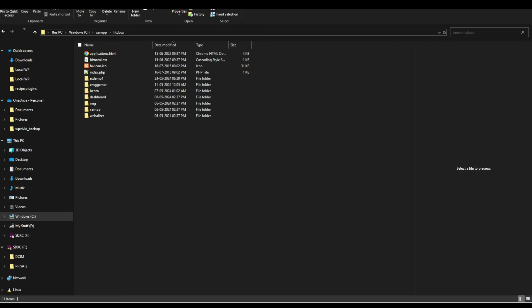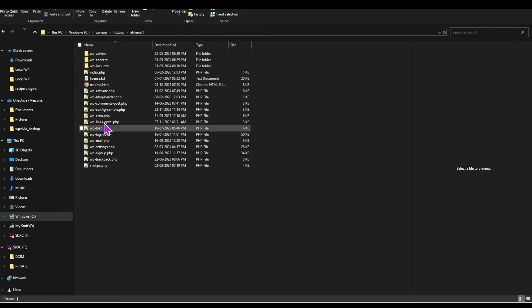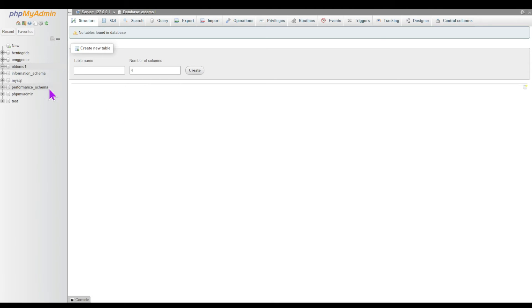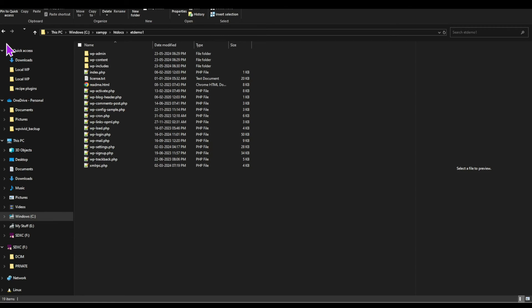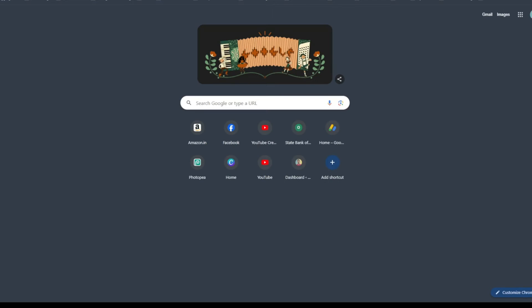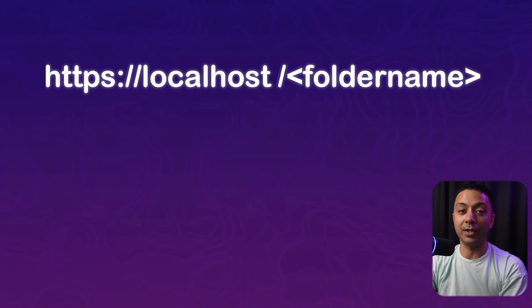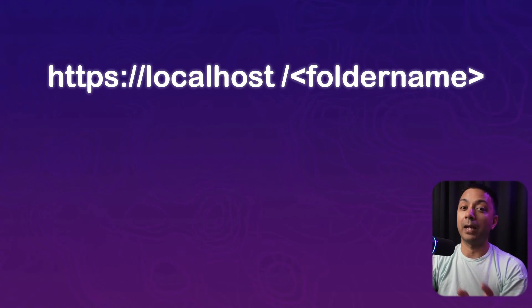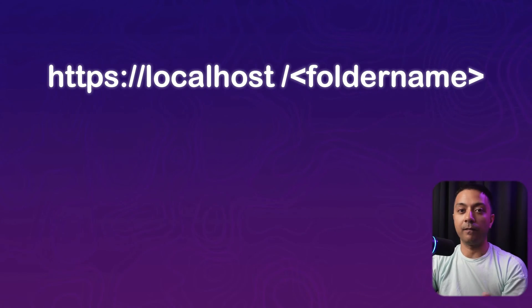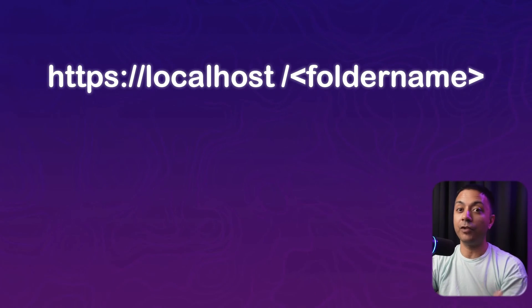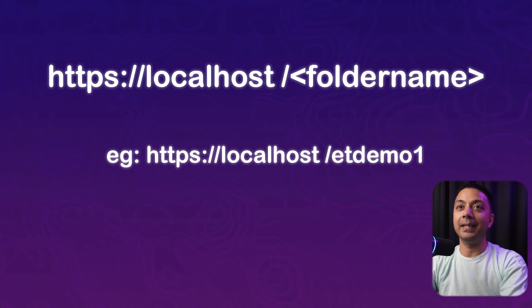Now we have created our database and our WordPress files are copied. To connect the database with our file system, open a new browser tab. Type in the URL: http://localhost/et-demo-one — where 'et-demo-one' is the folder name we created inside htdocs where we copied our WordPress files. Hit Enter, and now we are at step one of connecting WordPress with our database.